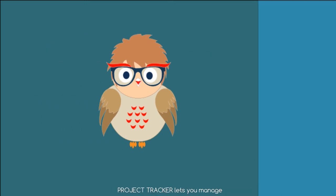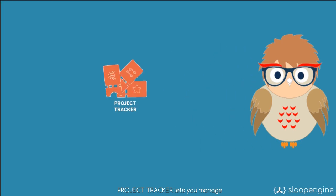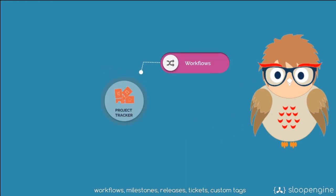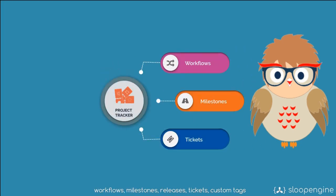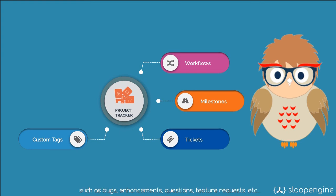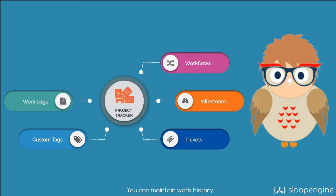Project Tracker lets you manage workflows, milestones, releases, tickets, and custom tags such as bugs, enhancements, questions, feature requests, etc. You can maintain work history as work logs and generate timesheets.